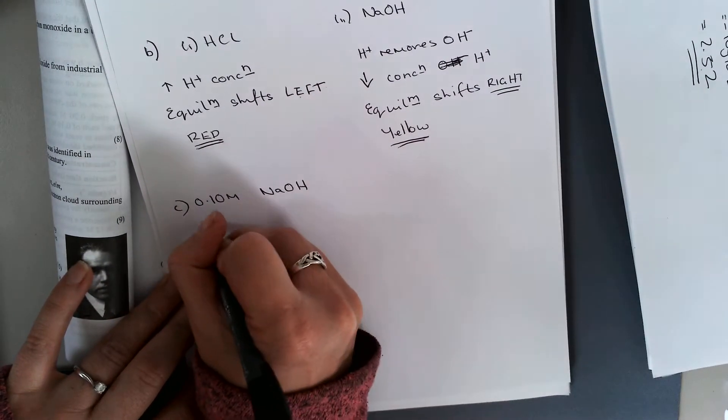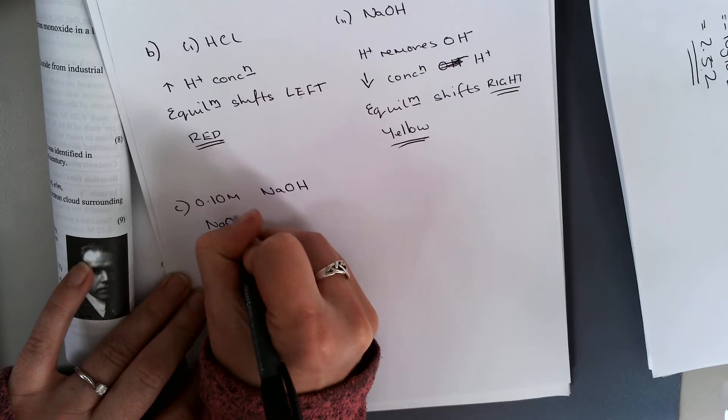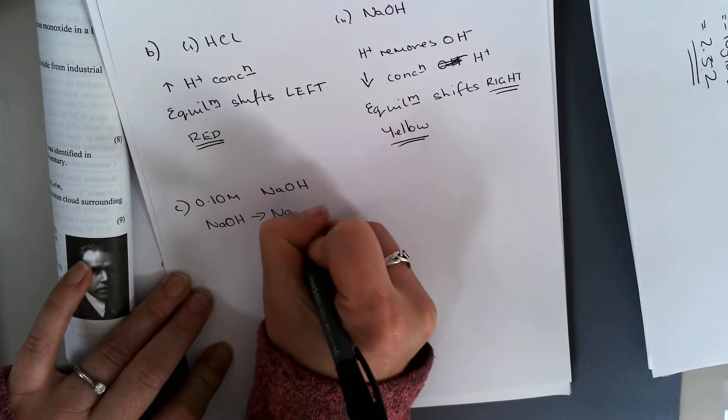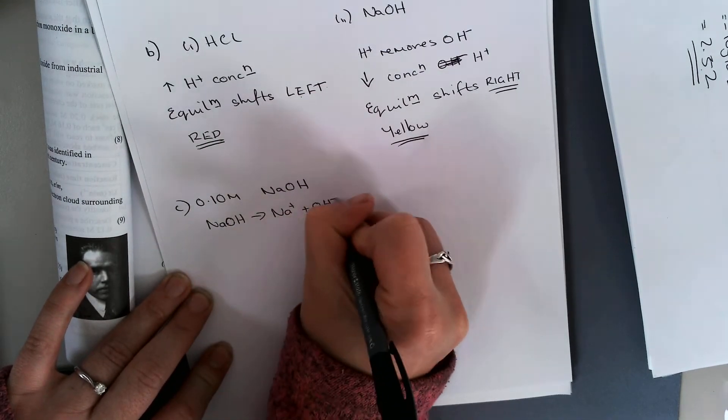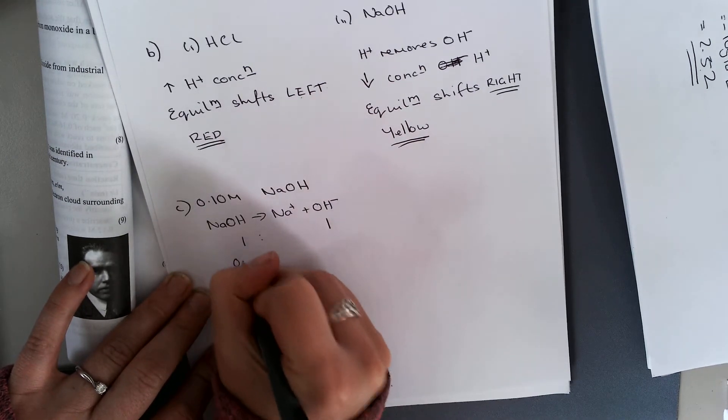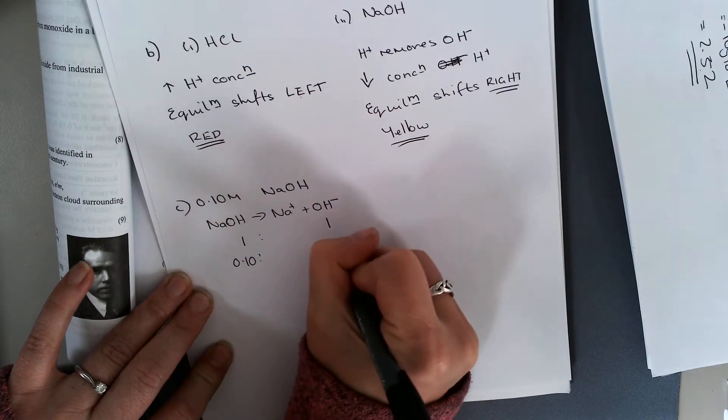I have NaOH, and that's going to dissociate to produce Na plus and OH minus. My ratio there is 1 to 1. I have 0.01 moles here.